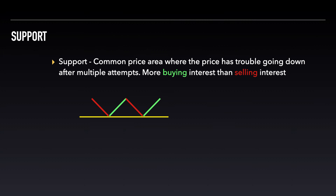Support is defined as a common price area where the stock has trouble going down after multiple attempts, as this is due to more buying demand at a specific price area. It's an area where there's a concentration of demand where buyers are more inclined to buy and sellers are less willing to sell.